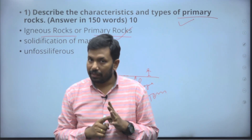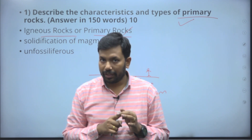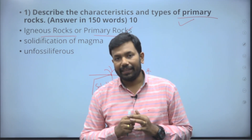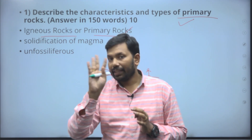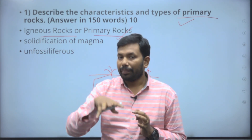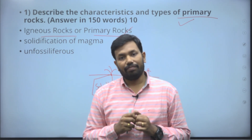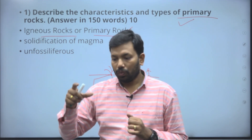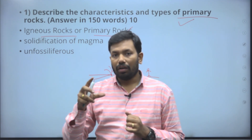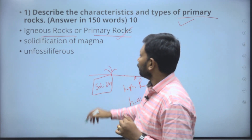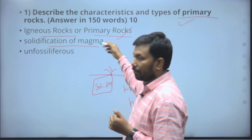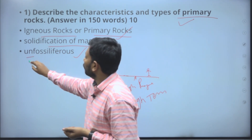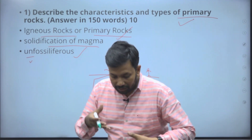This basic understanding is needed to answer the question. You can write about various igneous rocks in the world and how they are distributed. First, explain this in at least three to four lines — not as a definition, but how primary rocks, i.e. igneous rocks, have been formed. This shows the examiner that you know the basic fundamentals — solidification of magma — and of course, no fossils.